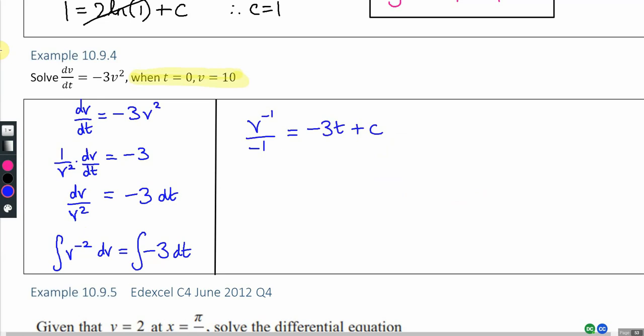But if we sub in t is 0 when v is 10, then we can find the particular solution that passes through that point. So v is 10, and that happens when t is 0. Let's tidy this up. That means c is minus 1 tenth.